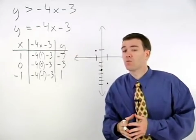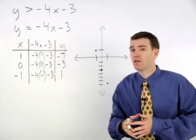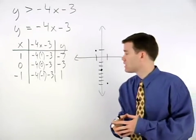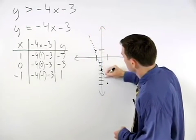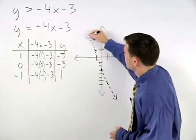However, it does form a boundary on the graph. So to represent this idea, we draw a dotted line through our points.